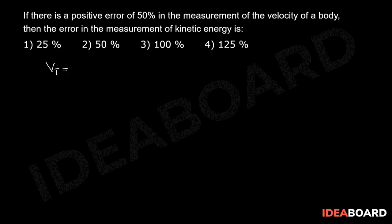of the velocity is v. Then measured value of velocity is 150 by 100 into v because of positive error of 50 percent, that should be equal to 1.5v. Then true kinetic energy KT should be equal to half